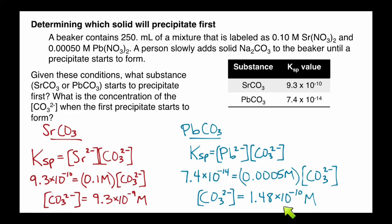The 1.48 times 10 to the negative 10th is smaller than this carbonate concentration. So as soon as we've got enough carbonate to reach this molarity, lead carbonate will start to precipitate out. Now if we keep adding more sodium carbonate, eventually we'll get to a point where we've reached this value, and so strontium carbonate will precipitate out as well. But this one's going to precipitate out first. So lead carbonate is our answer.